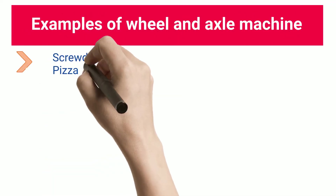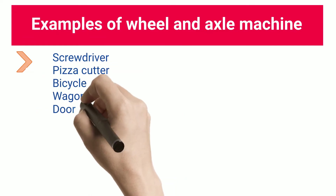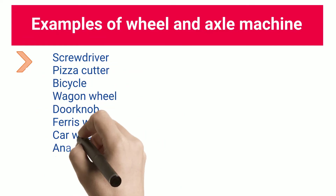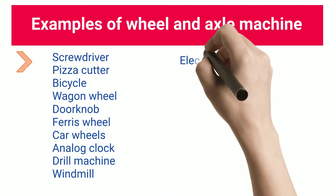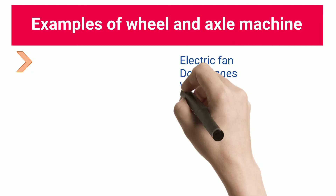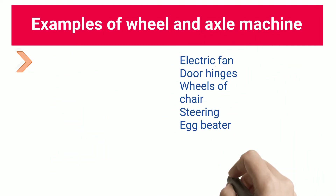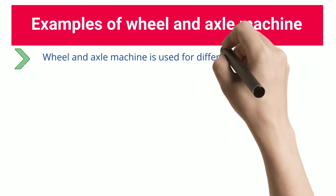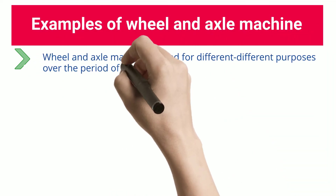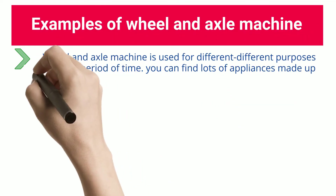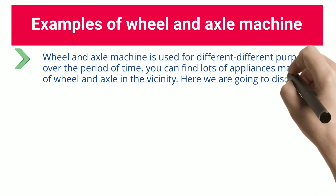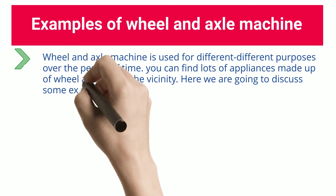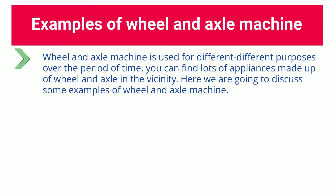Examples of Wheel and Axle Machine. Wheel and Axle machines are used for different purposes over the period of time. You can find lots of appliances made up of Wheel and Axle in the vicinity. Here we are going to discuss some examples of Wheel and Axle Machine.